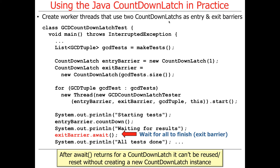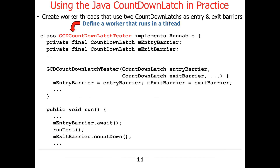The main thread then calls await on the exit barrier, which waits for all the other threads to finish running in the background. The thing to remember is that we can't reuse this exit barrier — once await returns, we have to make a whole new one, because it's a one-shot barrier. Here is the GCD countdown latch tester — the Runnable that's going to be running in a thread.